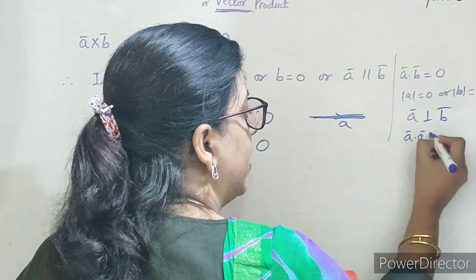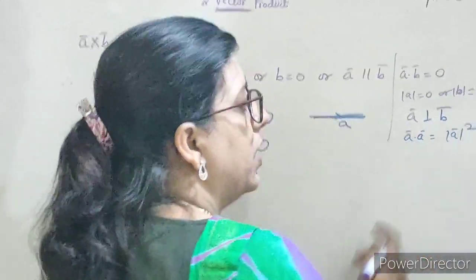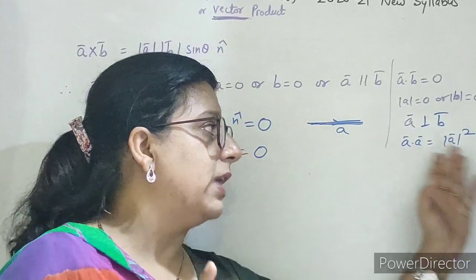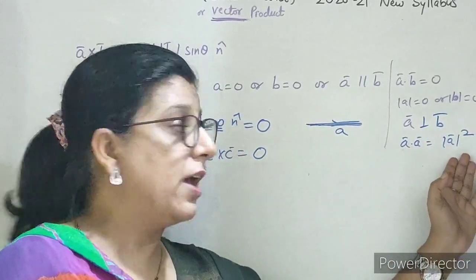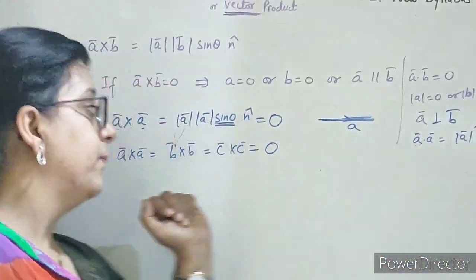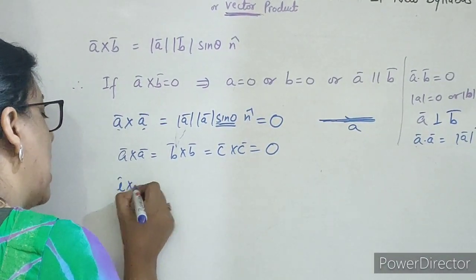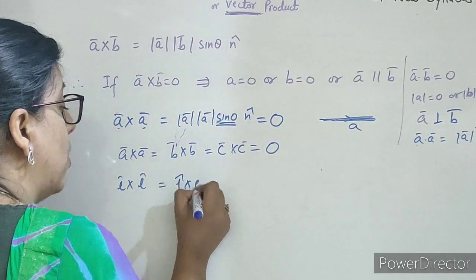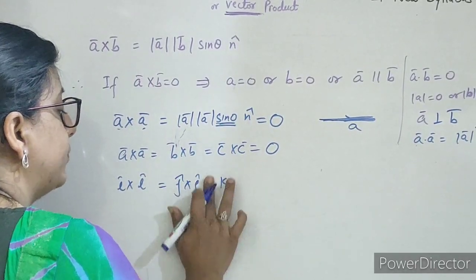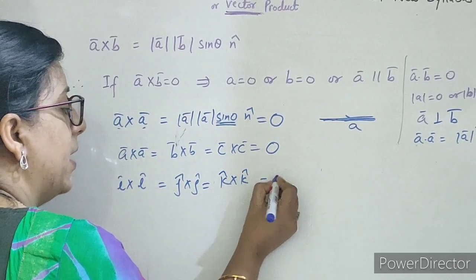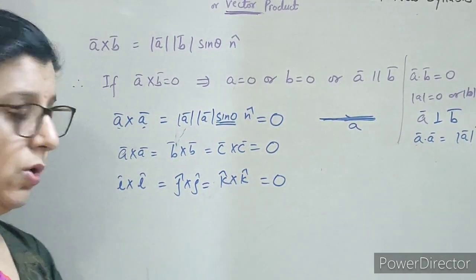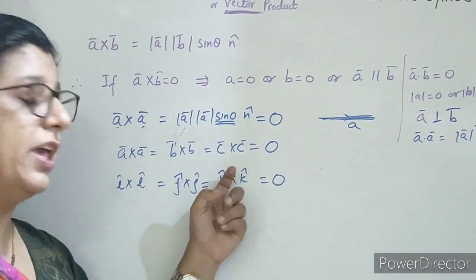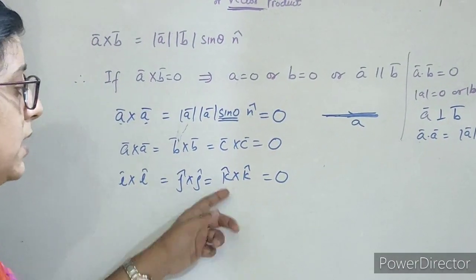Lekin dot mein kya likhte the hum? A dot A ko likhte the mod A square — kyunki mod A, mod A, cos zero, aur cos zero one hota hai, so A dot A kitna ho jayega? Mod A square. Isi ke basis par: î×î, ĵ×ĵ, k̂×k̂ — yeh bhi sab kya ho jayenge? Zero, kyunki î aur î ke beech mein angle zero, ĵ aur ĵ ke beech mein angle zero, k̂ aur k̂ ke beech mein angle zero.